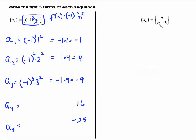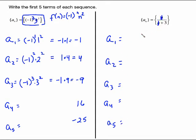Another example with a different formula. For a sub n equals n over n plus 3, find a sub 1 through a sub 5. A sub 1 means put 1 here and here: 1 over 1 plus 3 is 4, so one-fourth. A sub 2 means plug 2 in, giving 2 over 2 plus 3, which is 2 over 5. The pattern continues — the third term should be one-half and the fourth should be 4 sevenths.